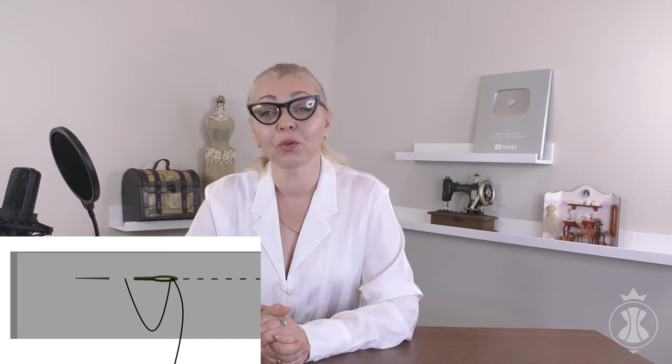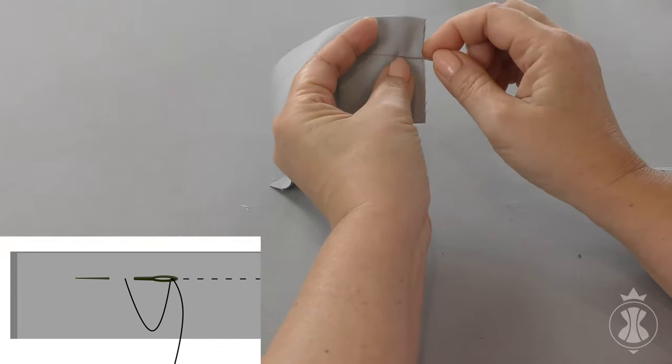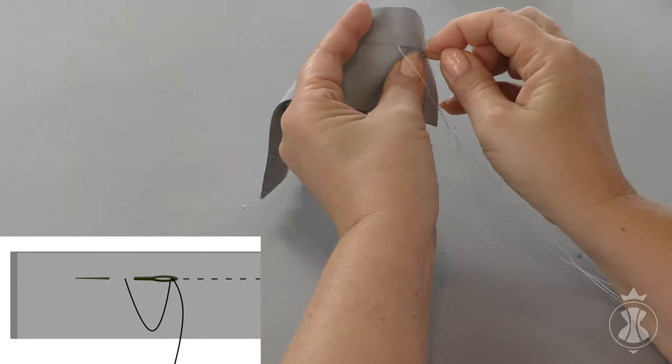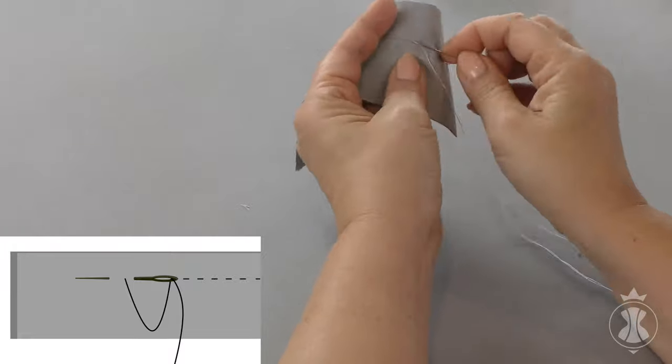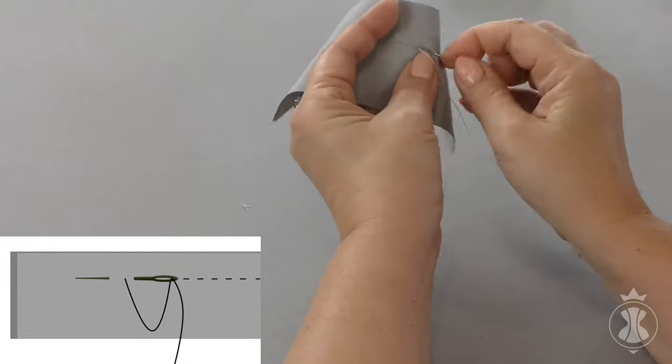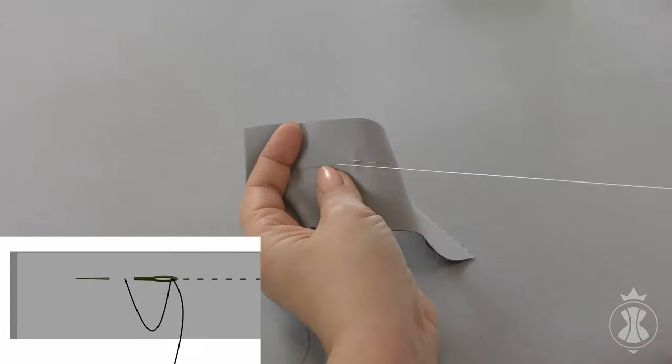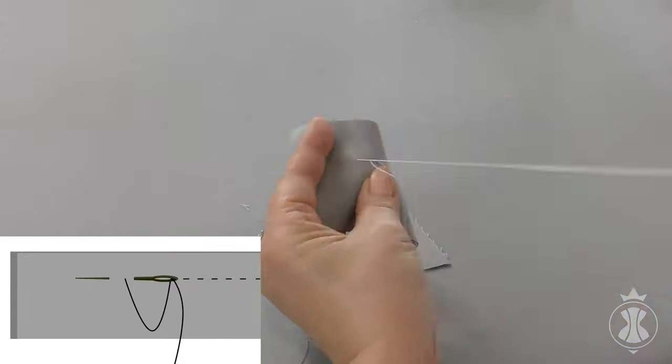Pick Stitch. To do the stitch, you should insert the needle through the top layer of fabric and catch only a couple of threads from the bottom layer. It is used to secure the inner allowances to the inside of a garment, facings, etc.